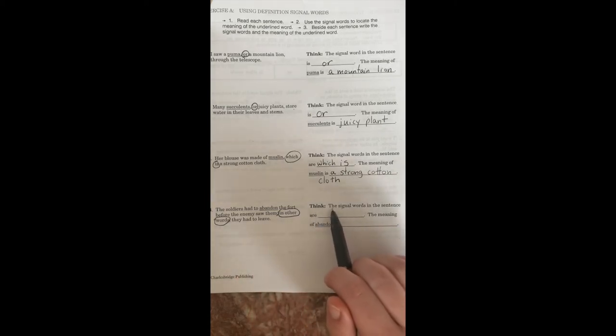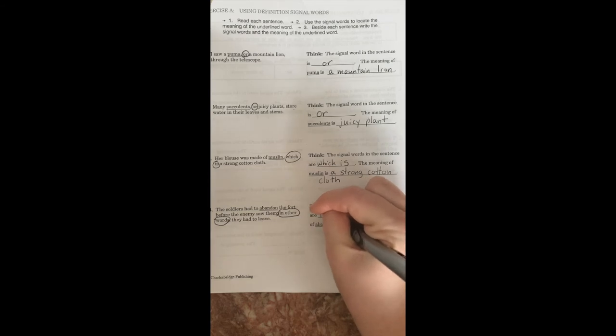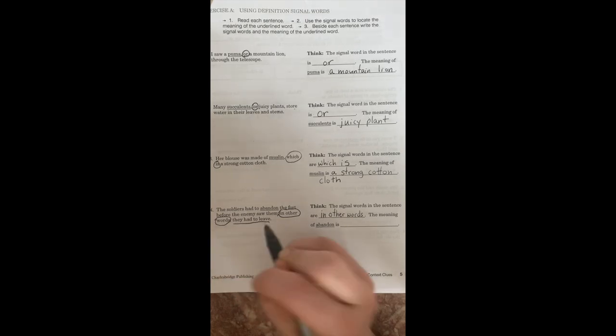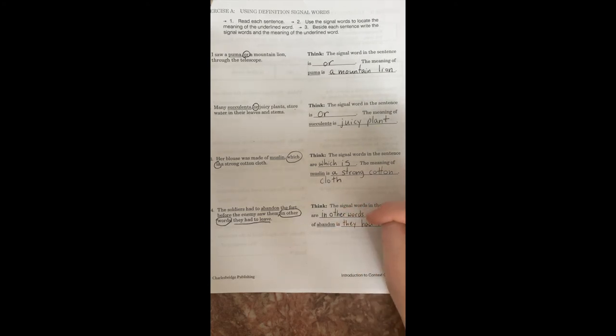So let's see, the signal words in the sentence are, we already found it, right? In other words. So let's write it down. And we can read the sentence one more time to make sure that we know what the meaning of abandon is. So the soldiers had to abandon the fort before the enemy saw them. In other words, they had to leave. Oh, perfect. So the meaning of abandon is they had to leave. So we can just write that exact thing. The meaning of abandon is they had to leave.